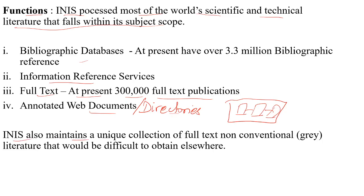INIS also maintains a unique collection of full-text non-conventional gray literature that would be difficult to obtain elsewhere. Gray literature is literature that is either unpublished or has been published in non-commercial form. Examples of gray literature include government reports, policy statements, and issues papers.